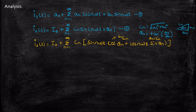Throughout our analysis, we will be considering equation 2 to simplify the expressions. In equation 2, the parameters we need to find are: I_out, Cn (which requires An and Bn), and theta_n. Once we find these, it will be easy to substitute.